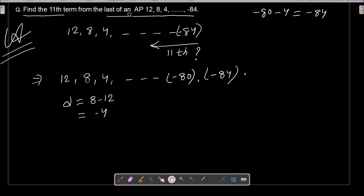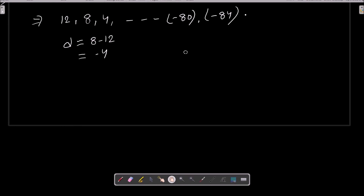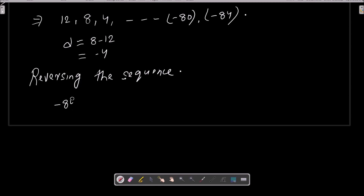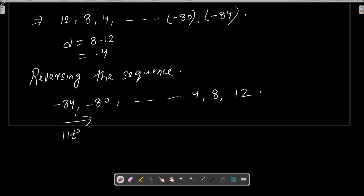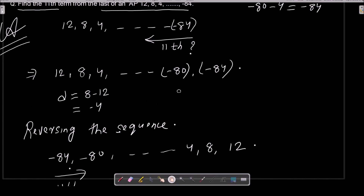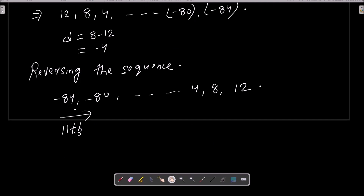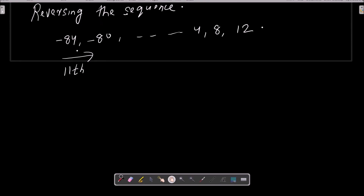Since we need to calculate from the last, we reverse the sequence. After reversing, the new sequence is: -84, -80, ... 4, 8, 12. Now we need to calculate the 11th term from the first of this reversed sequence.